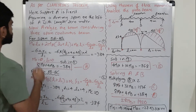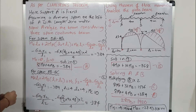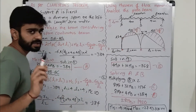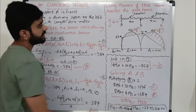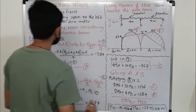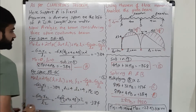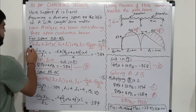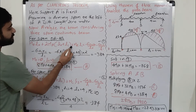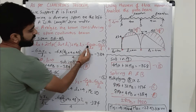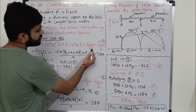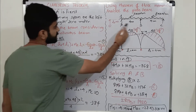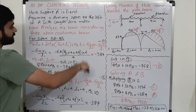Now we will repeat the procedure from the previous lecture. For span OA and AB, the first pair gives the equation: M₀L₀ + 2Mₐ(L₀ + L₁) + M_B·L₁ = -6A₀x₀/L₀ - 6A₁x₁/L₁. The second equation will be for span AB and BC. We will first solve for span OA and AB.